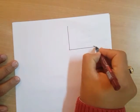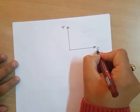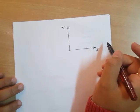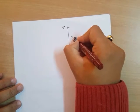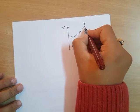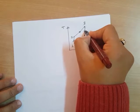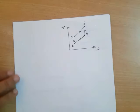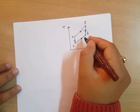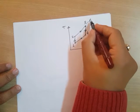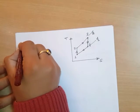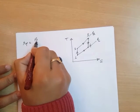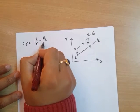Analyzing the Brayton cycle on a T-S diagram: 1 to 2 is isentropic compression, 2 to 3 is isobaric heat addition, 3 to 4 is isentropic expansion, and 4 to 1 is isobaric heat rejection. We define the pressure ratio RP = P2/P1 = P3/P4, where P2 is the higher pressure and P1 is the lower pressure.